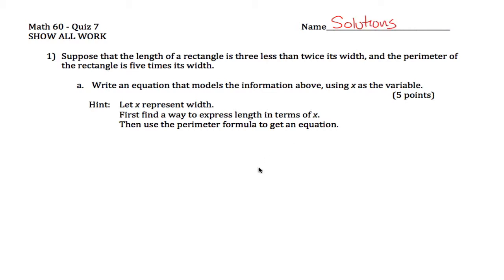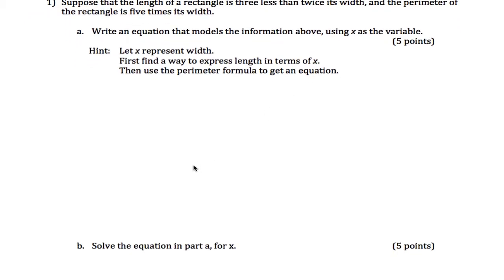Here are our quiz 7 solutions for math 60. First problem, we have this kind of geometric word problem. It gives us some information: the length of a rectangle is 3 less than twice its width, and the perimeter is 5 times its width. We want to write an equation that models the information above using x as the variable.